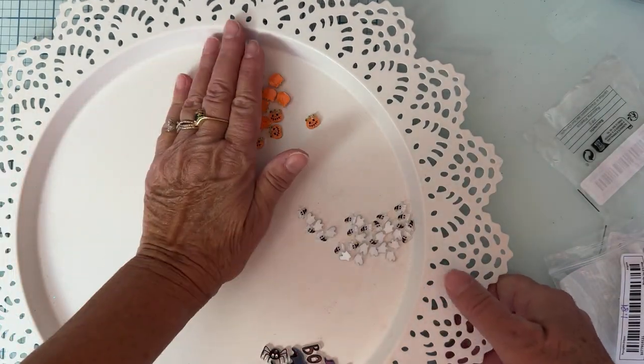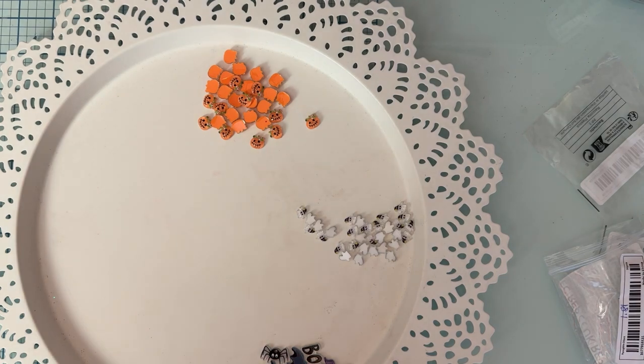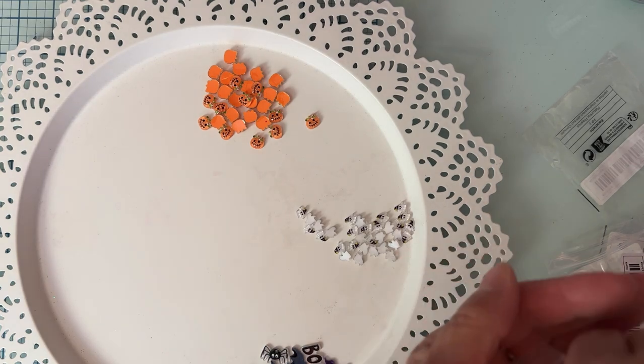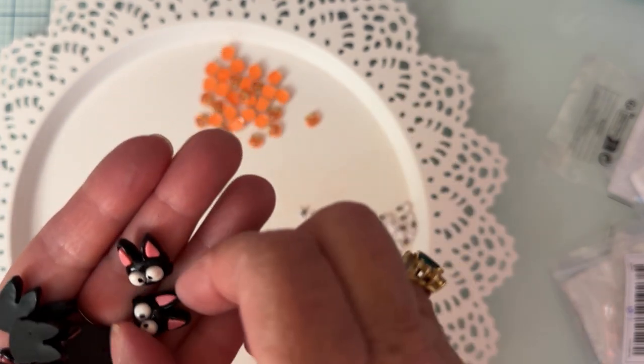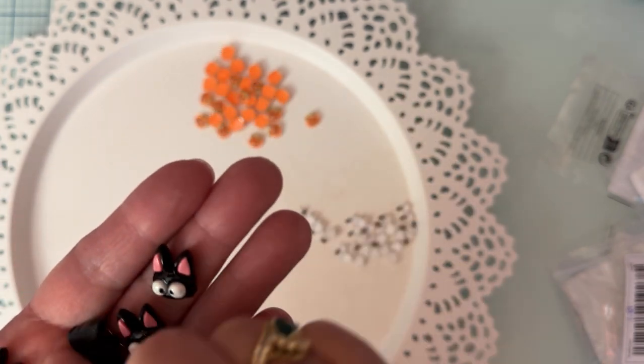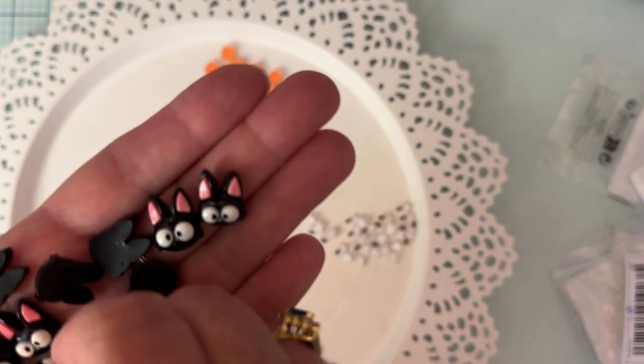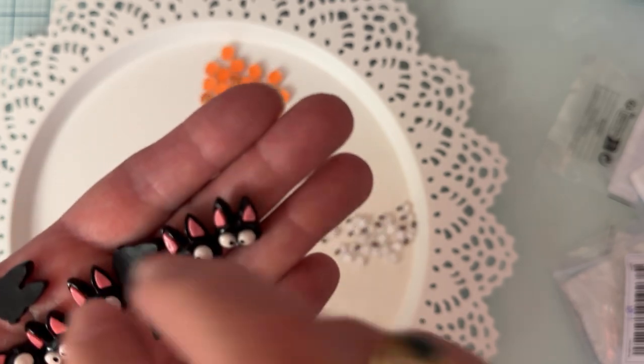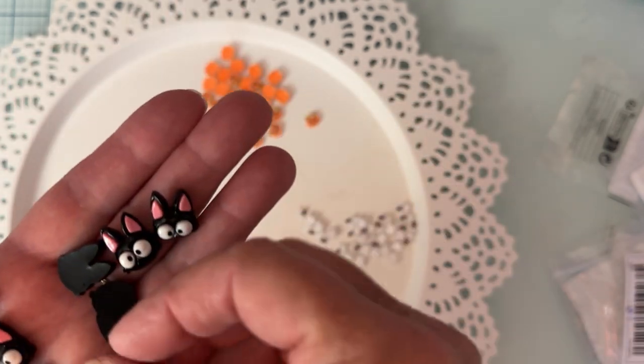Next up I got these. They were 84 cents and there's 10 in the pack. These are cute little, I think they're supposed to be bats because of those ears. Super cute, aren't those darling? There's 10 of them in the pack for 84 cents. I like the little pink ears, so very cute. What is that little thing out to the side?